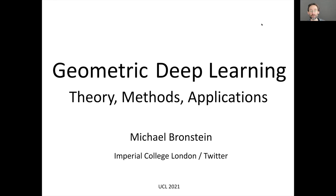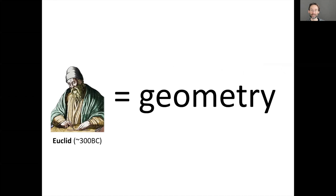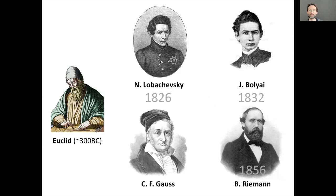Let me start by taking you deep into the past. For more than 2000 years, when we said the word 'geometry' it was uniquely understood as Euclidean geometry, because simply no other geometry existed. This Euclidean monopoly came to an end in the 19th century with the first constructions of non-Euclidean geometries, credited to Lobachevsky, János Bolyai, and Carl Friedrich Gauss.